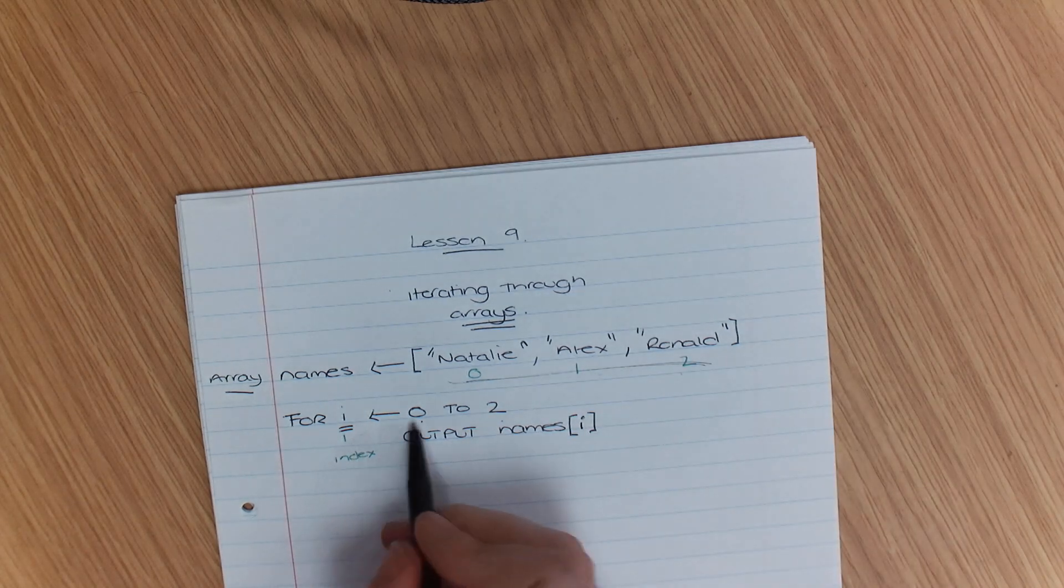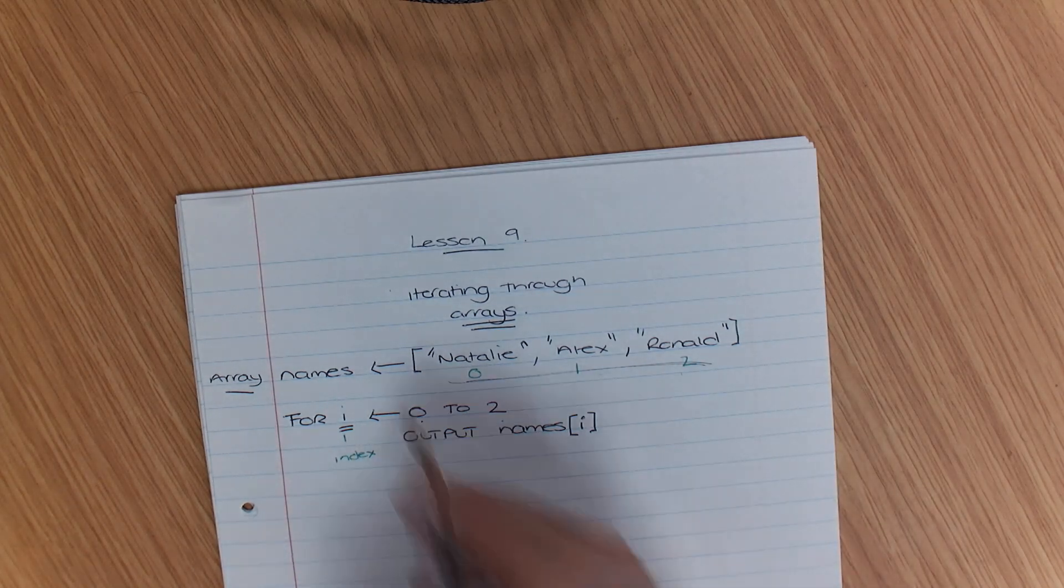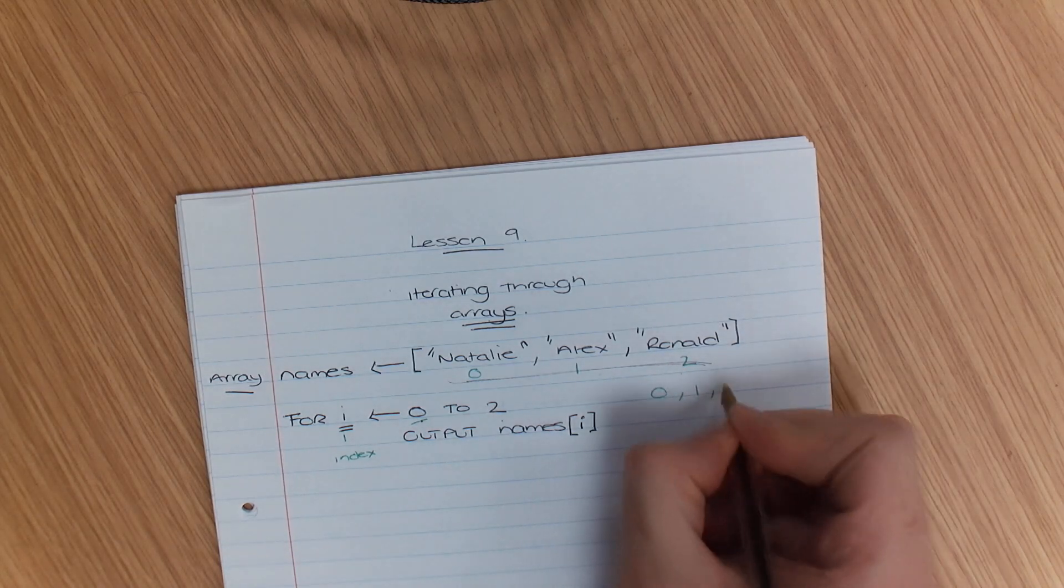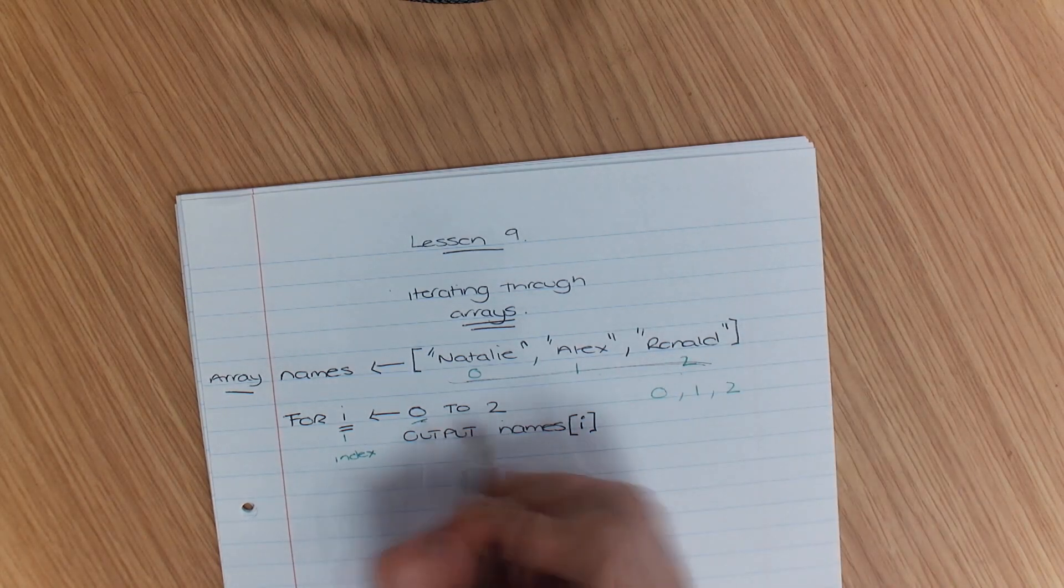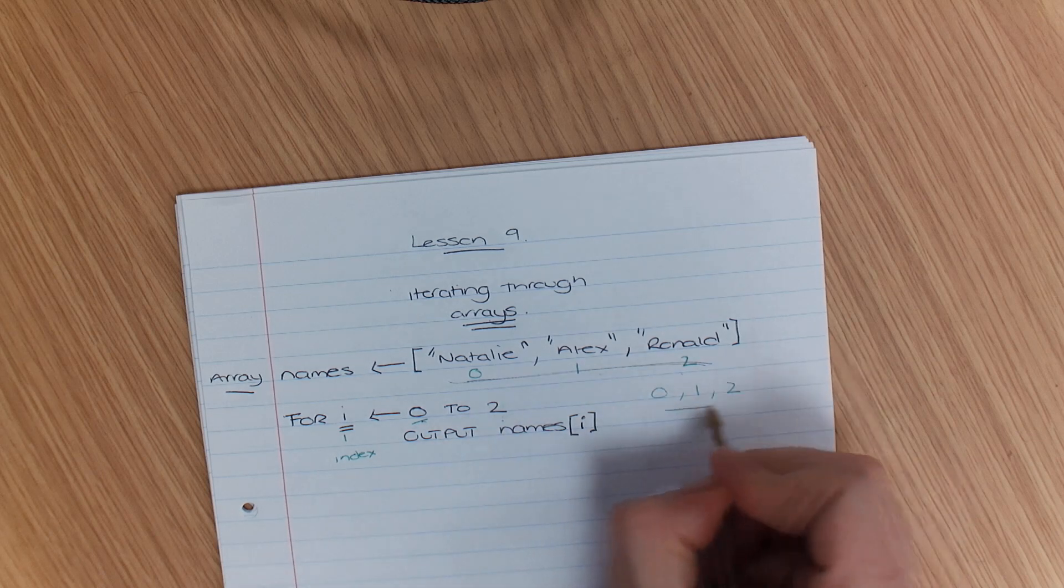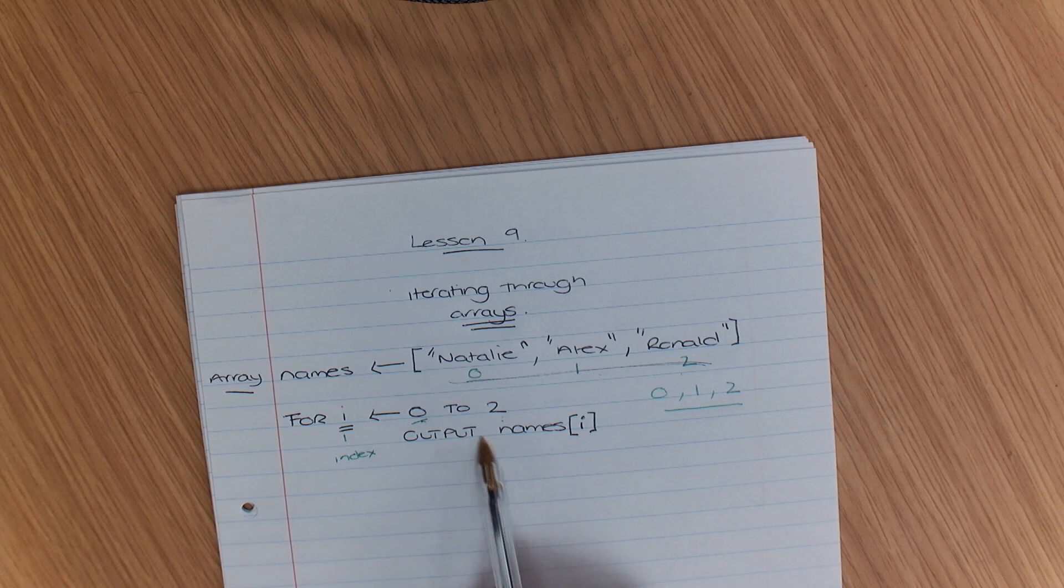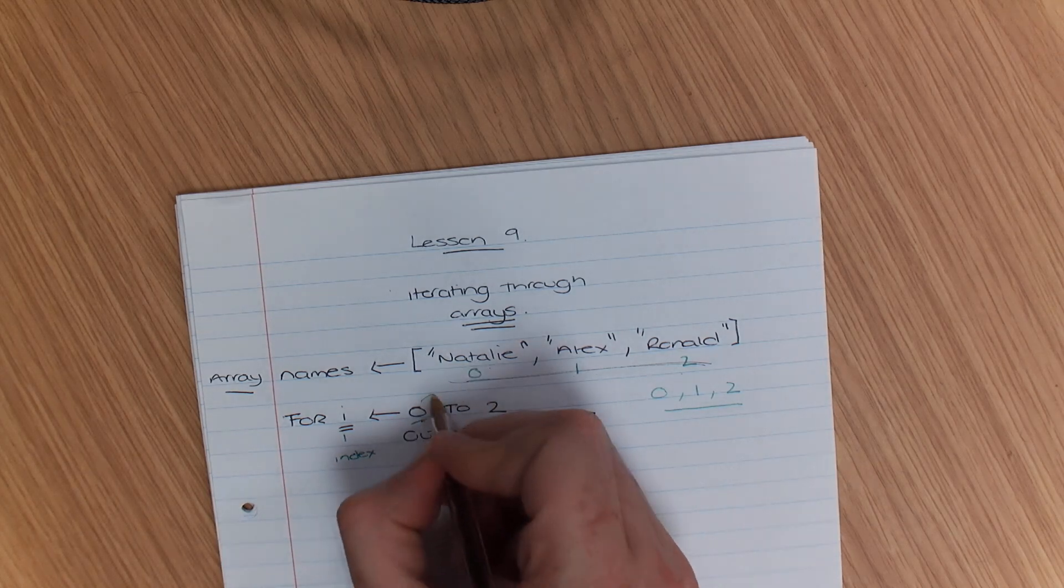That i represents, just so we can see what it looks like, will represent 0, 1, and 2. 0 to 2. So they're all the items in between that loop. So what that would do is it would output Natalie, then the value of i goes up to 1, then the value goes to 2.